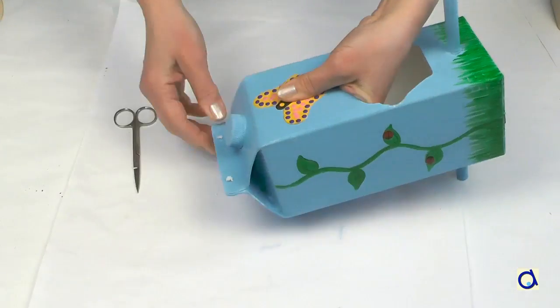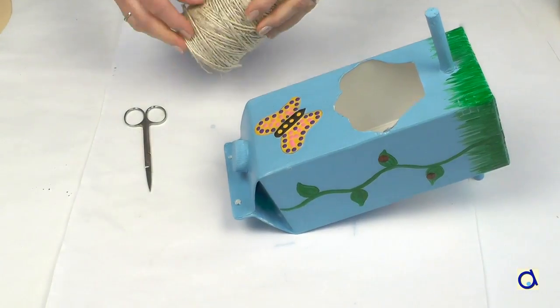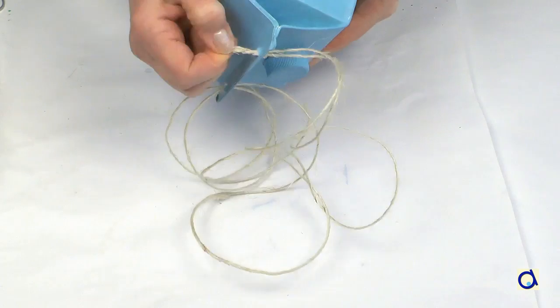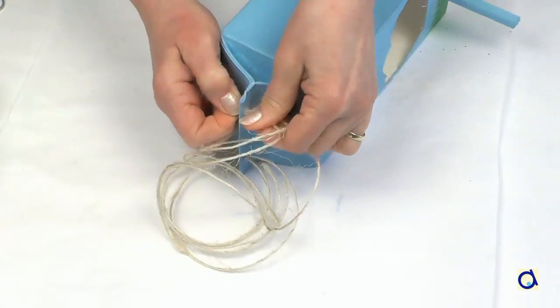Take sharp scissors and make holes in the top of the box. Pass a string through the holes to be able to hang the bird feeder from a tree branch.